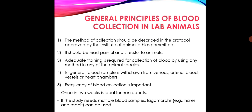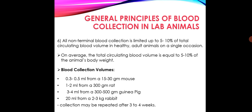In general, blood samples are withdrawn from venous, arterial blood vessels, or heart chamber. Frequency of blood collection is important — once in two weeks is ideal for non-rodents. If the study needs multiple blood samples, lagomorphs, for example hare and rabbit, can be used. All non-terminal blood collection is limited to 5 to 10 percent of the total circulating blood volume in a healthy adult animal on a single occasion. On average, the total circulating blood volume is equal to 5 to 10 percent of the animal's body weight.